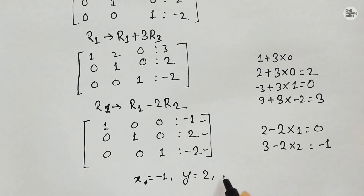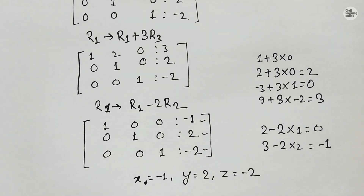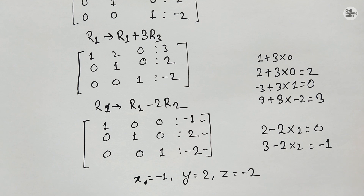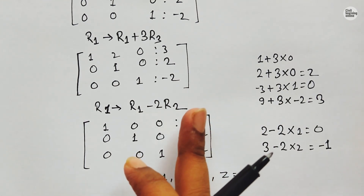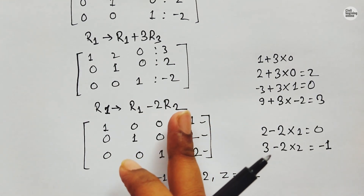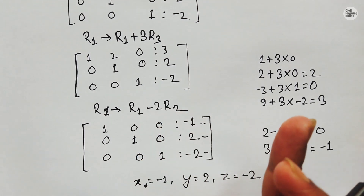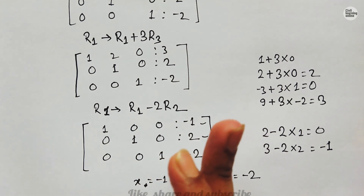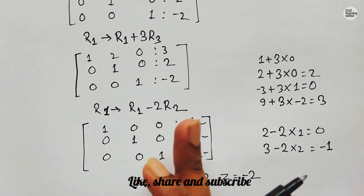The values -1, 2, and -2 are the values of x, y, and z respectively. So x = -1, y = 2, and z = -2. There will be one more solution link in the description, so do visit that video as well. See you in the next video, and don't forget to subscribe to the Civil Learning Online channel. Stay safe and take care.